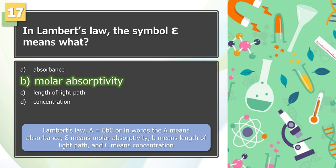The answer is B. Lambert's law: A equals E, B, C. Or in words, the A means absorbance, epsilon means molar absorptivity, B means length of light path, and C means concentration.